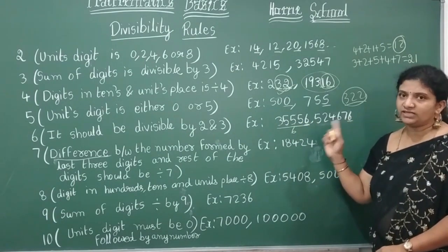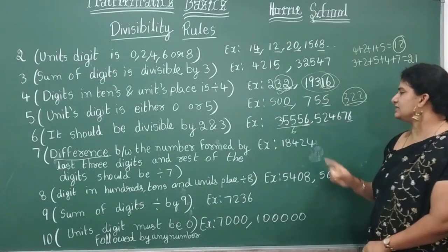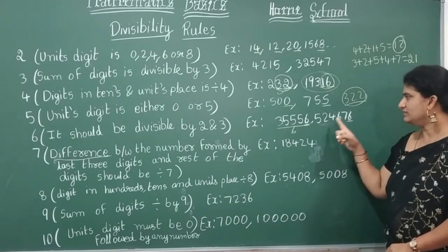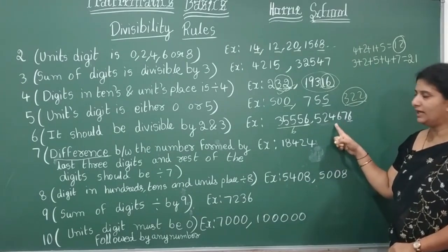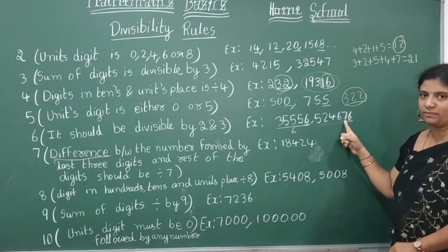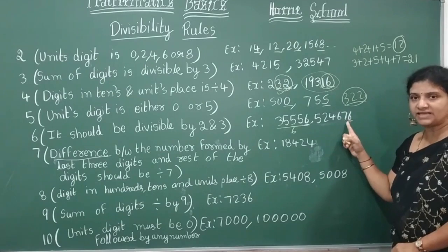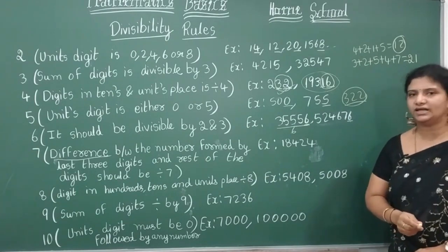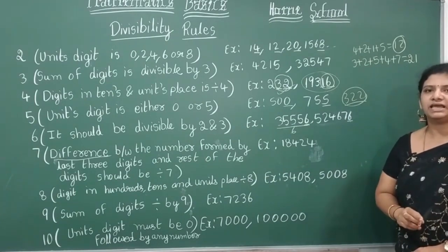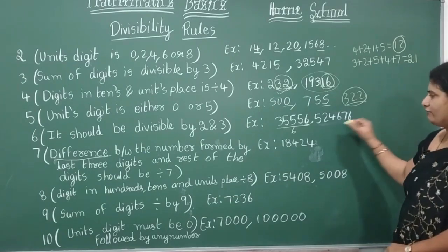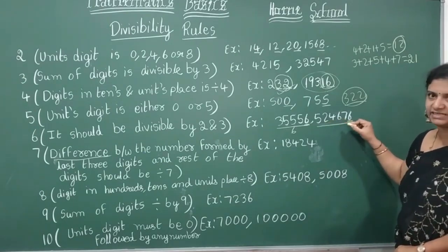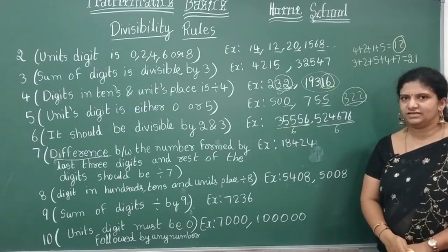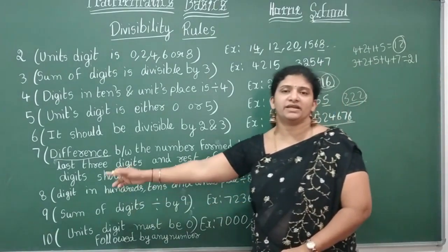Another example for divisibility by 6: first check divisibility by 2 — units digit satisfies the rule. Then check by 3 — add the digits: 5 + 2 + 4 + 6 + 7 + 6 = 30. Is 30 divisible by 3? Yes — 3 × 10 = 30. Both conditions are satisfied, so the number is divisible by 6.